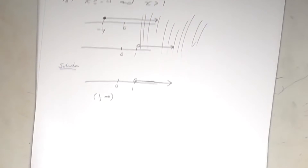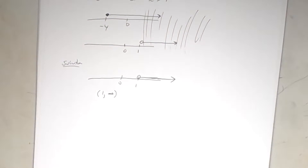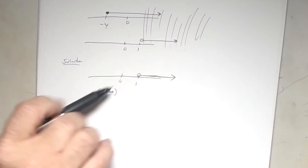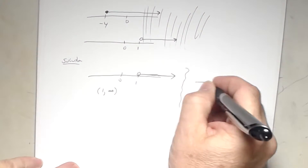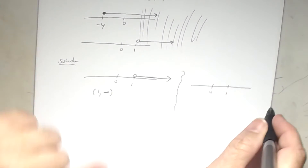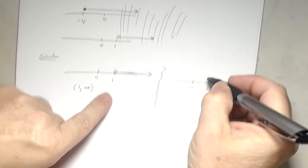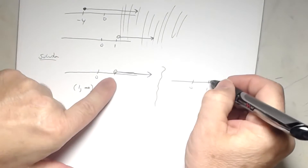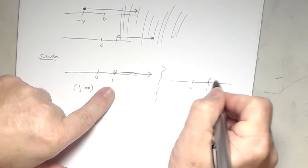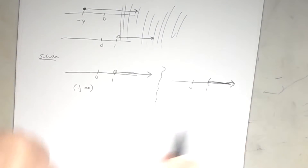Also in this section, MyMathLab may start using parentheses and brackets instead of open and closed circles. An open circle corresponds to parentheses; a closed circle corresponds to a bracket. So for this solution with an open circle at 1 going right, you write a parenthesis at 1 with an arrow going right.